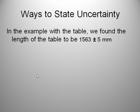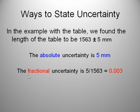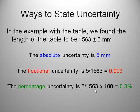Let's talk about ways you can state uncertainty. Remember we did the length of the table, we found the length to be 1563 millimeters plus or minus 5 millimeters. We can say the absolute uncertainty is 5 millimeters. We can also say that the fractional uncertainty is we take the 5 divided by our value here, and we get this fraction, 3 over 1000. The percentage uncertainty is you just multiply this fractional by 100, so we get 0.3% would be our percentage uncertainty.